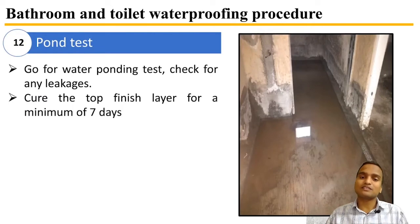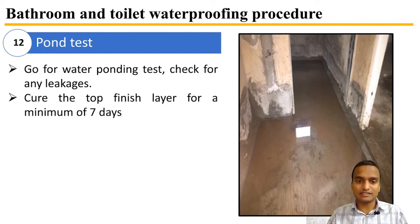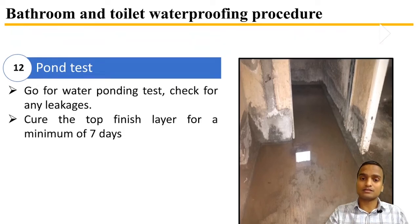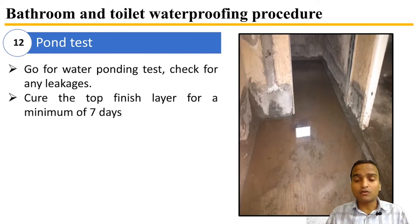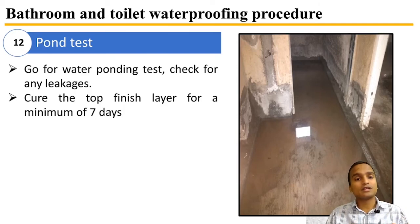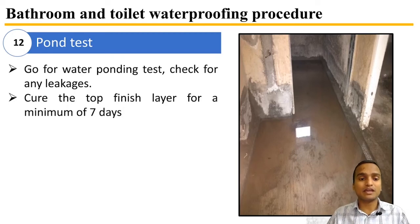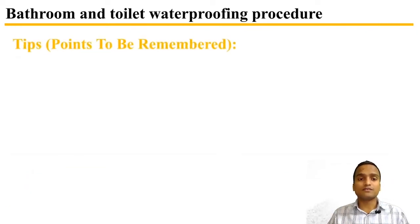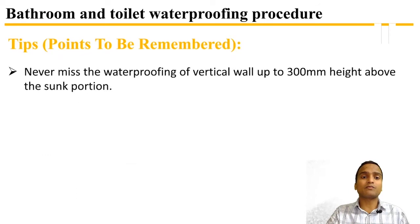Finally, we do the water ponding test again, checking for any leakages, and cure the top finish layer for a minimum of seven days. This is how waterproofing of bathrooms and toilets is done in multiple steps with a lot of design considerations. There are a few important tips to remember for waterproofing of bathrooms and toilets.